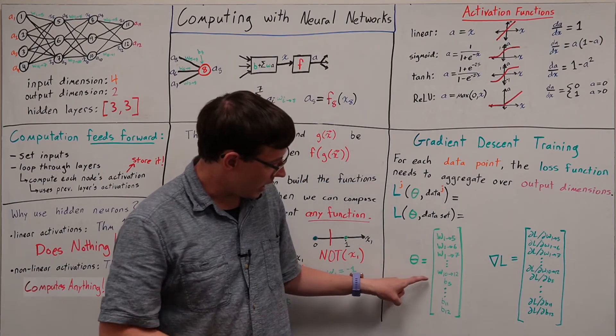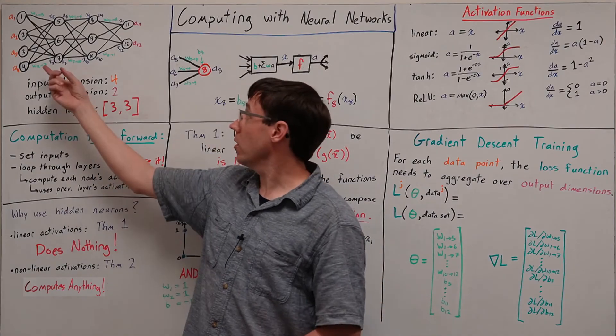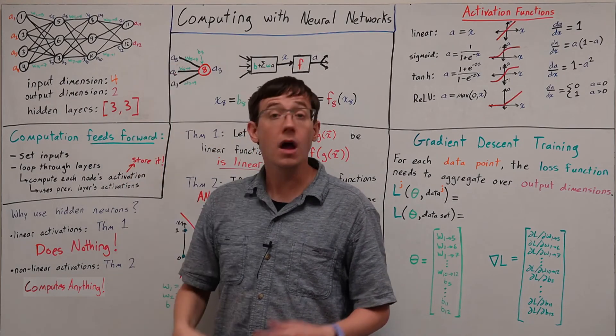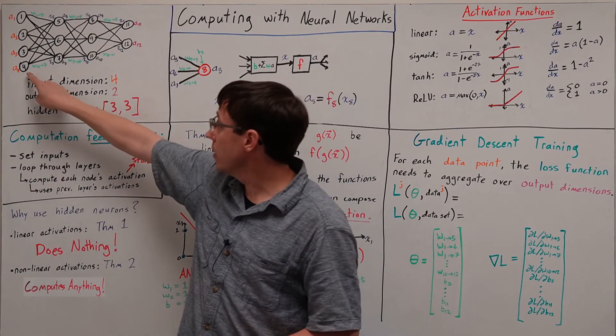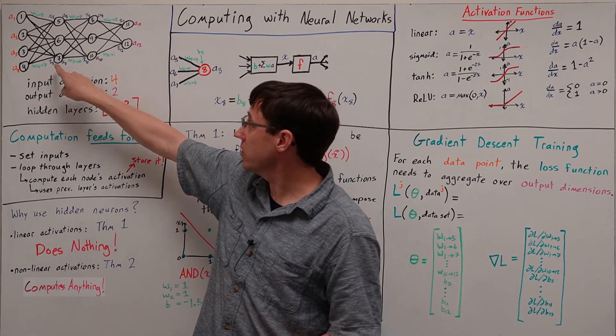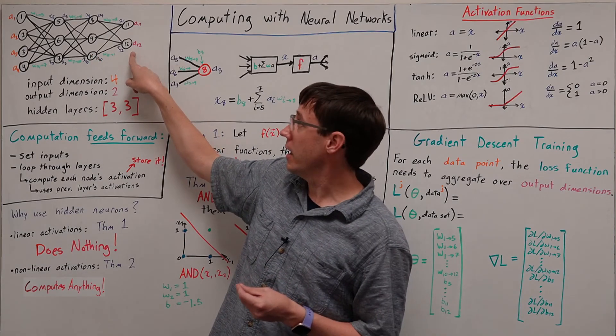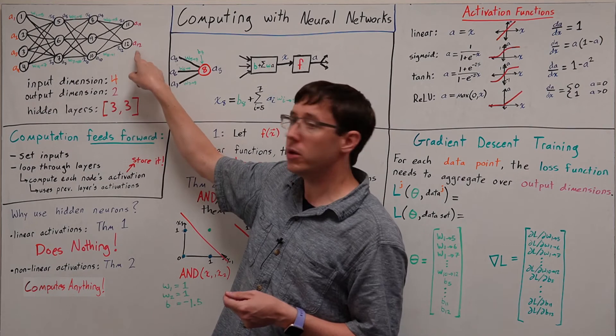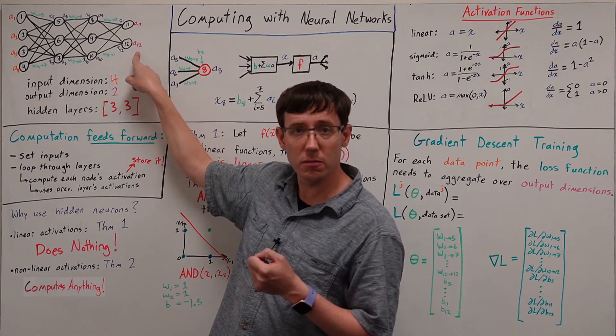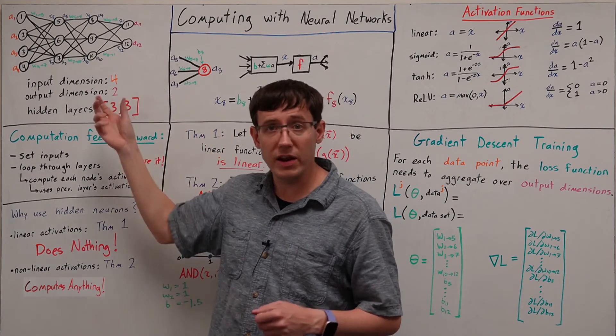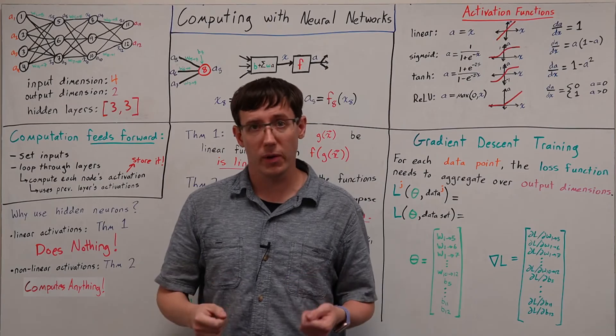And it would contain the bias for every single node. So in total, we have 4 times 3 plus 3 times 3 plus 3 times 2 weights in the network. And we have 3 plus 3 plus 2 biases, meaning that in total, this network has 35 parameters.